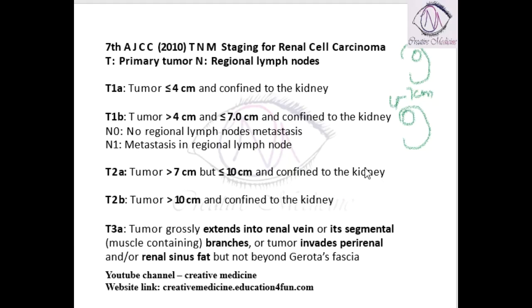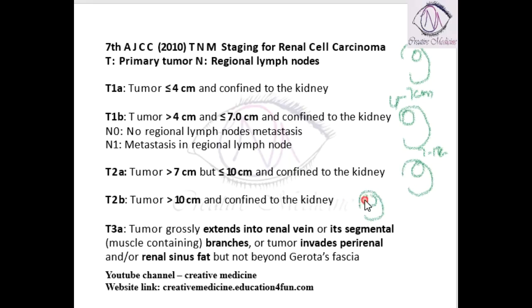If the tumor is confined to one kidney and the size is 7 to 10 cm, then it is T2A. If the tumor is confined to the kidney and it is more than 10 cm, then it is T2B.